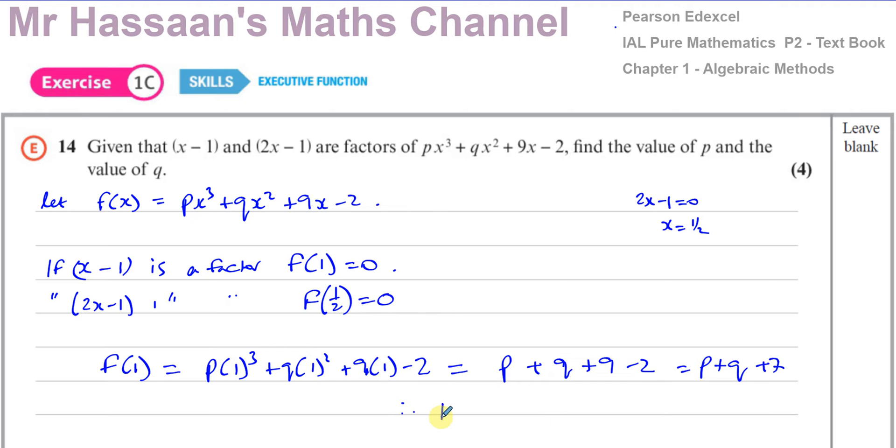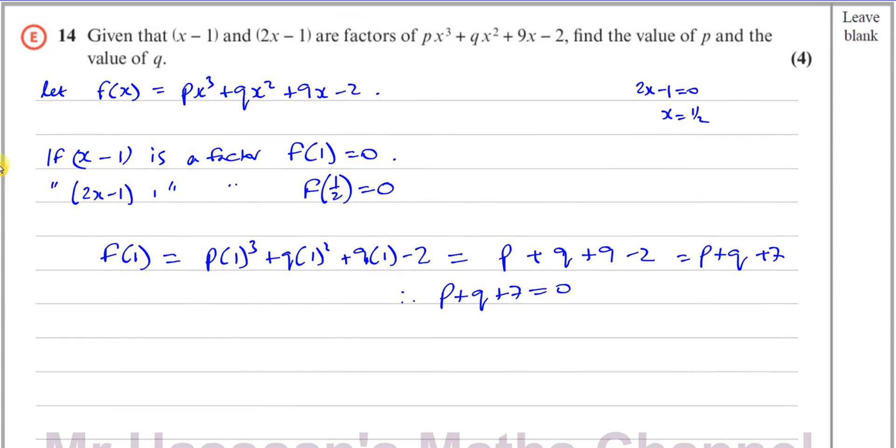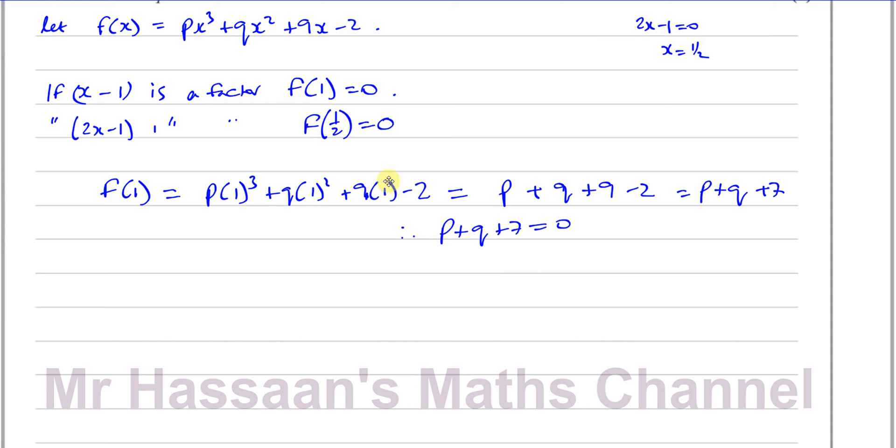So we can therefore say that p + q + 7 = 0, which therefore means p + q = -7. So we can say from this that p + q = -7. Now that's one equation that we have derived from the information.